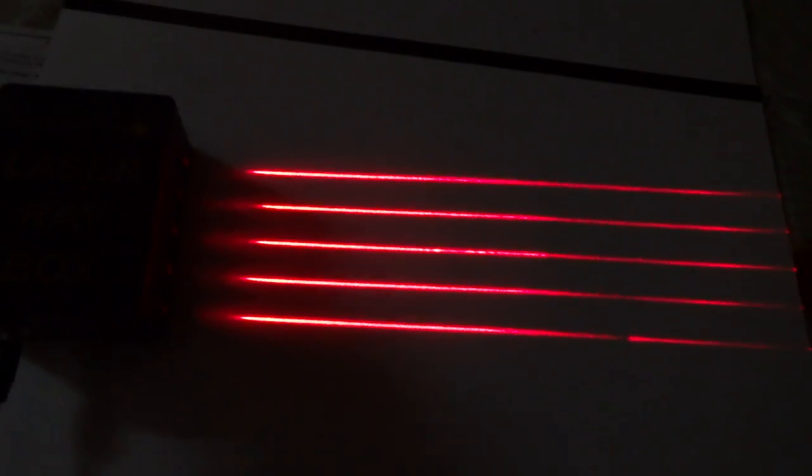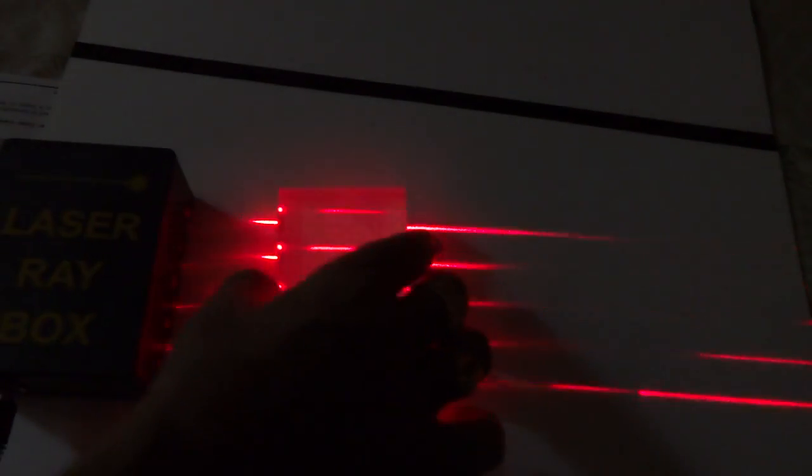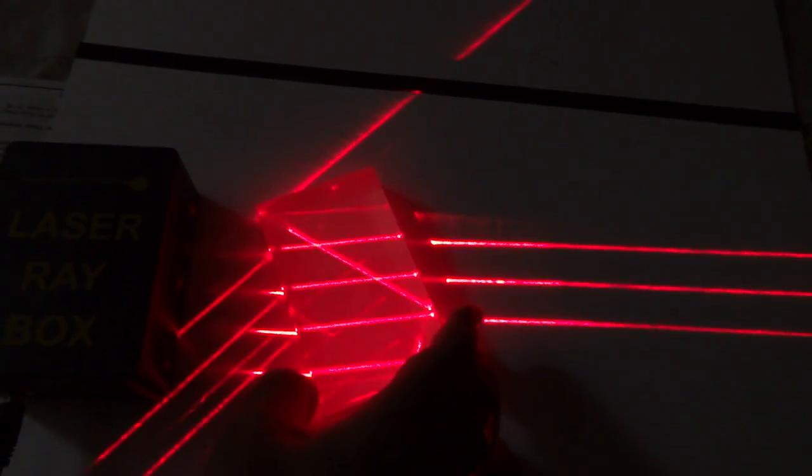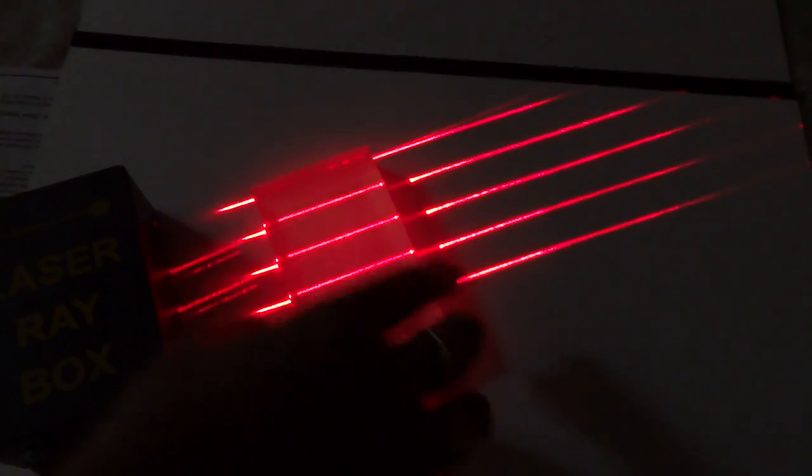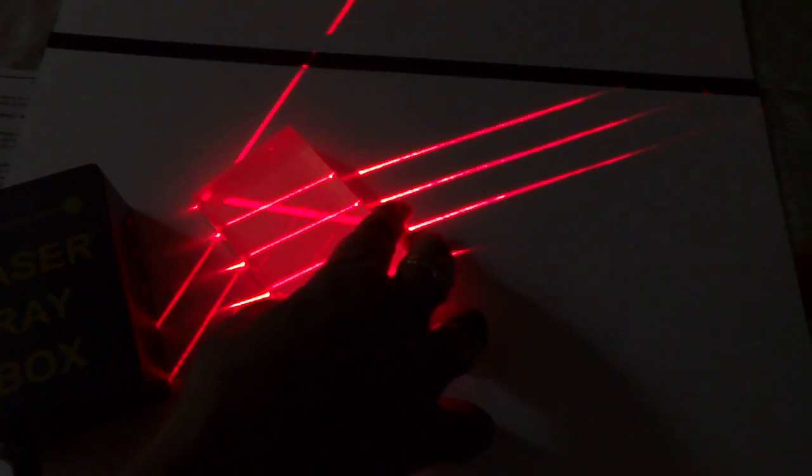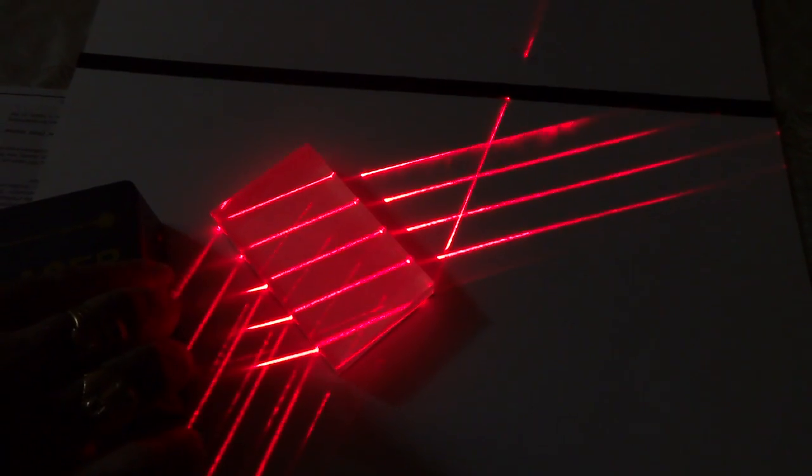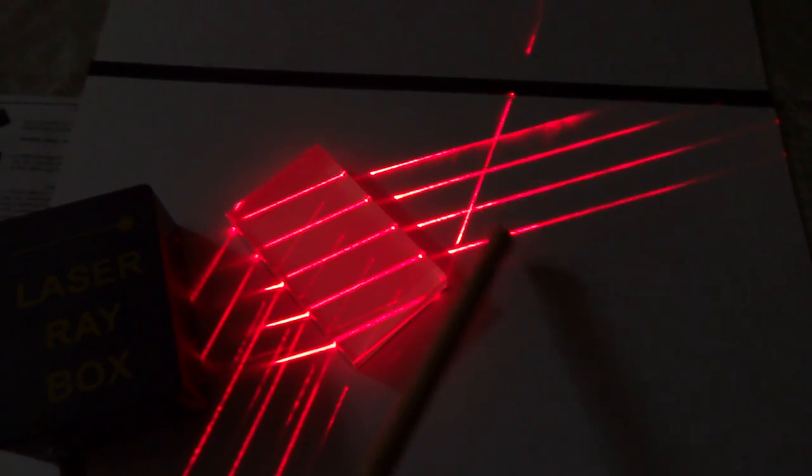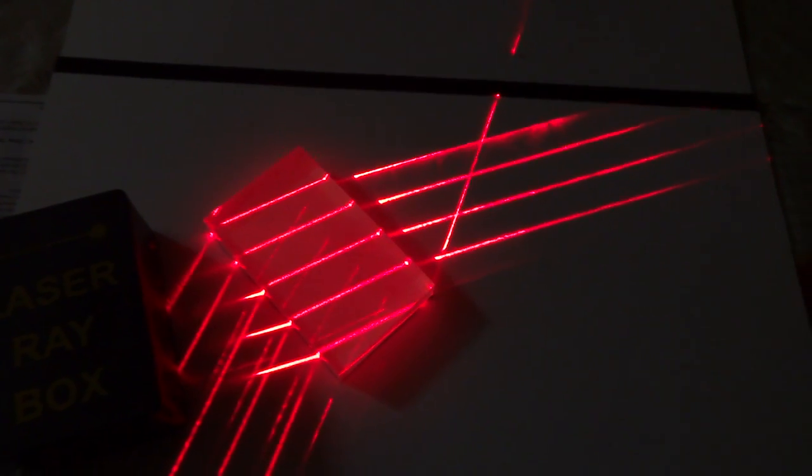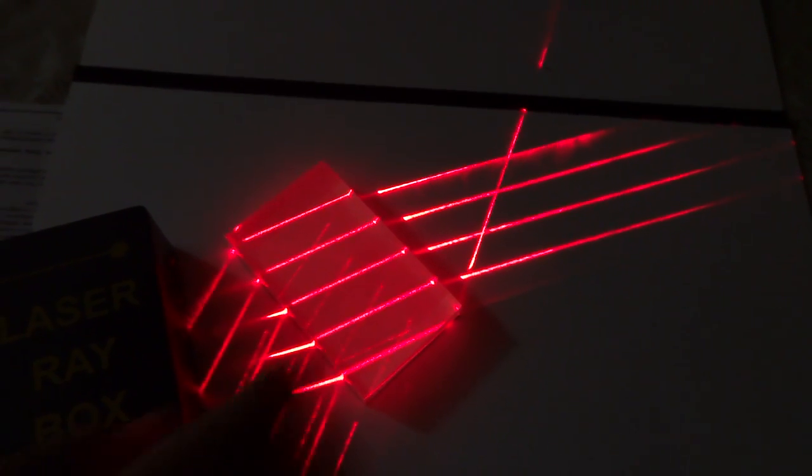Now, let us see the refraction through all the substances in dark room. So, when it is normal, all the rays appear to be normal only. Now, you can see that this ray is bending away from the normal. So, this is the observation through the glass slab.